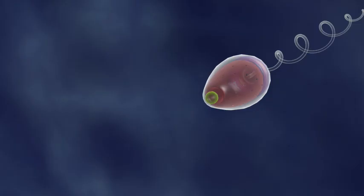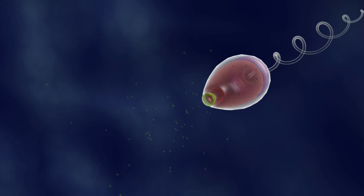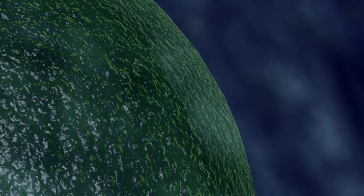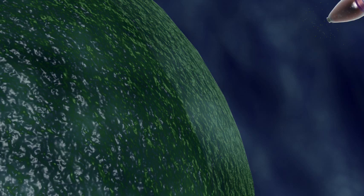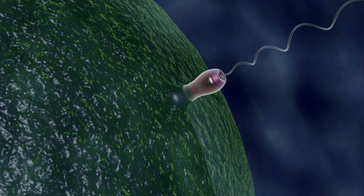After contacting with the egg jelly, the sperm releases the enzyme inside the vesicle to degrade the jelly. The acrosome membrane then is pushed out to form acrosome process, which projects to and fuses with the egg plasma membrane. The rest of the organelles then enter the egg cytosol.